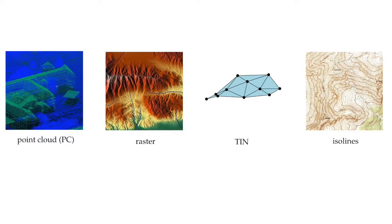We have seen different representations for terrains. The four most common are point clouds, the raster — which is a grid of regular cells — the TIN, and also isolines. In this lesson, we look at all the possible conversions between these four representations.